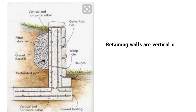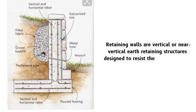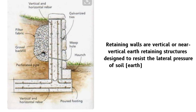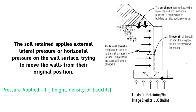Retaining walls are vertical or nearly vertical earth-retaining structures that are designed to resist the lateral pressure of the soil or other materials. The soil retained applies a certain amount of external lateral pressure or horizontal pressure on the wall surface, trying to move the wall from its original position. This stress imposed is a function of the height as well as the density of the backfill.